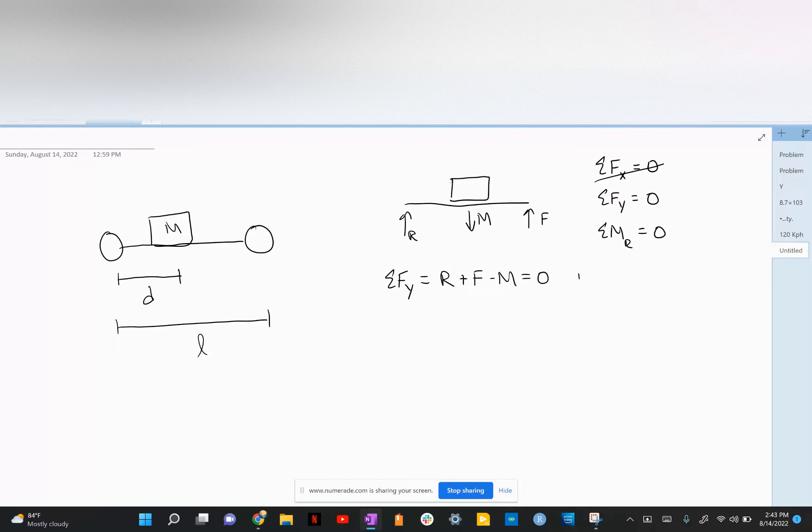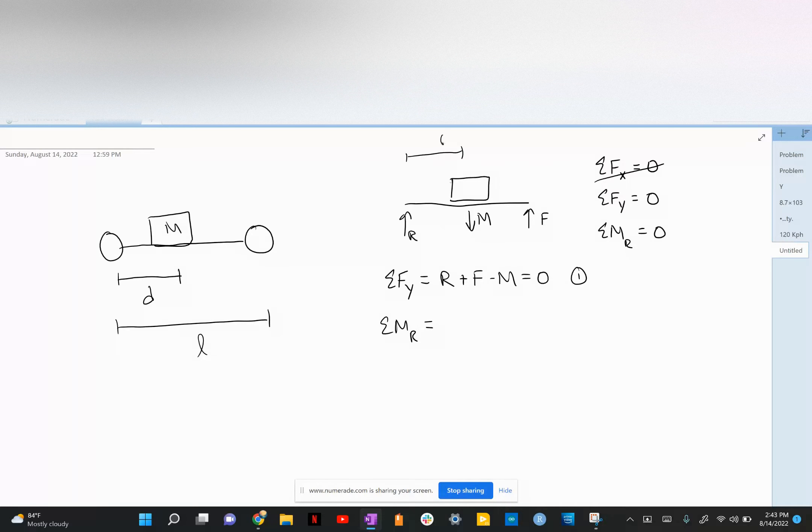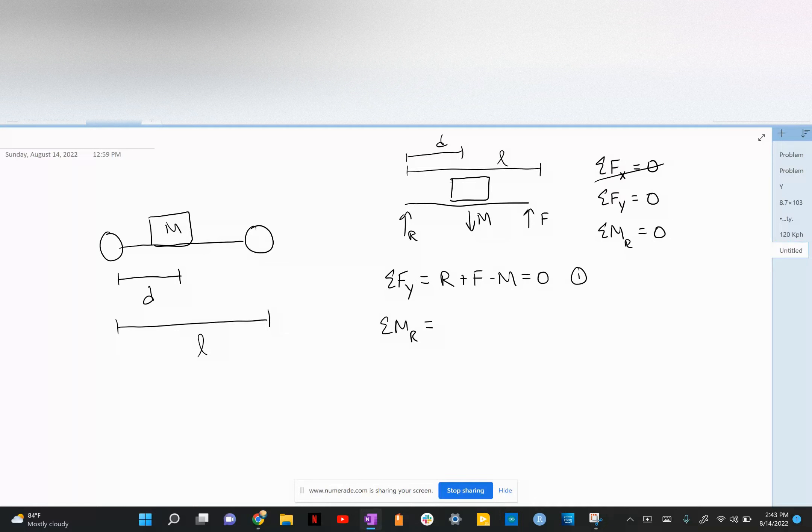We can label this equation one. For equation two, sum of the moments around R: this is distance D and this is distance L. You take the force times the length away from the rotational point.